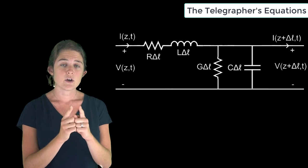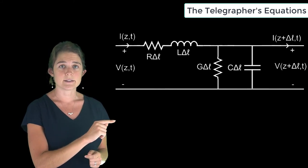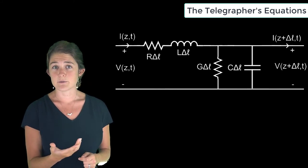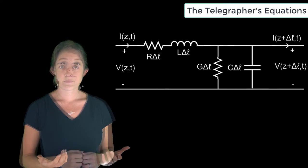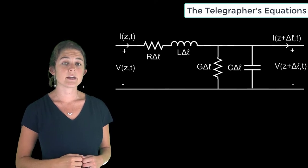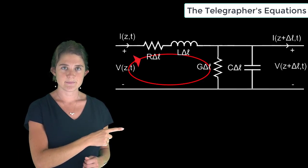Since we've assumed that this section of transmission line is electrically small, we can use normal circuit analysis tools like Kirchhoff's current and voltage laws to obtain a relationship between the input and output quantities. To do this, let's start by looking at the voltages around this loop.